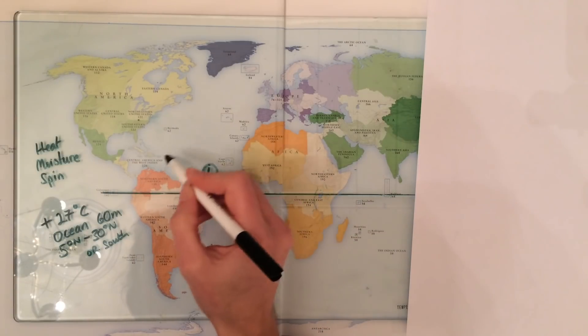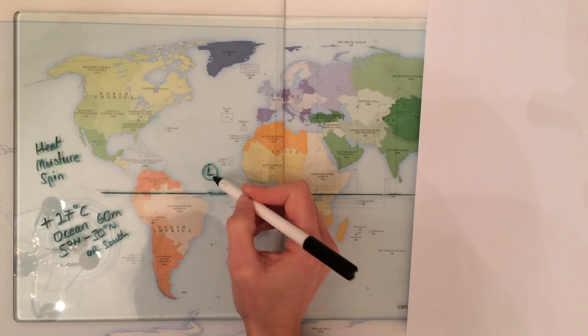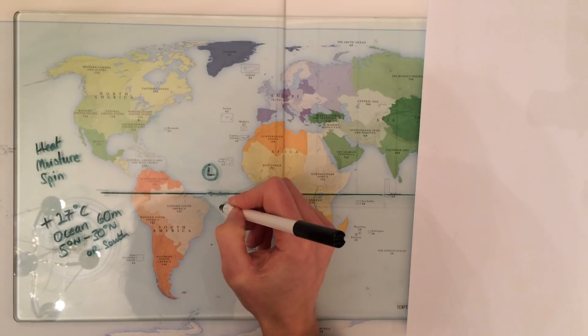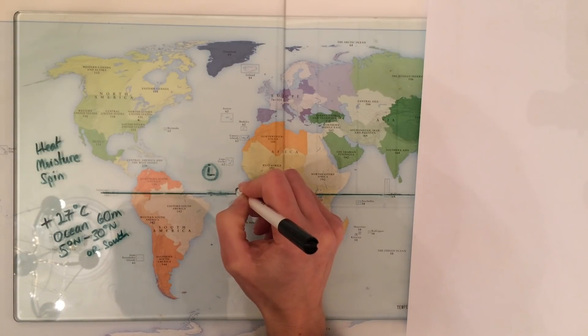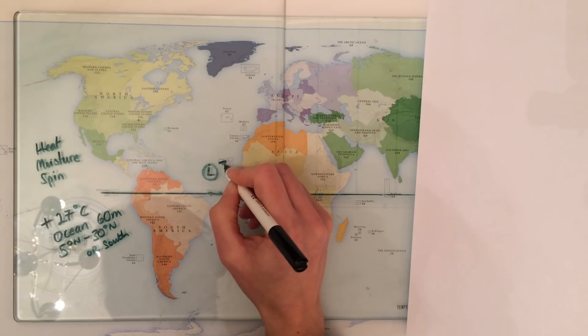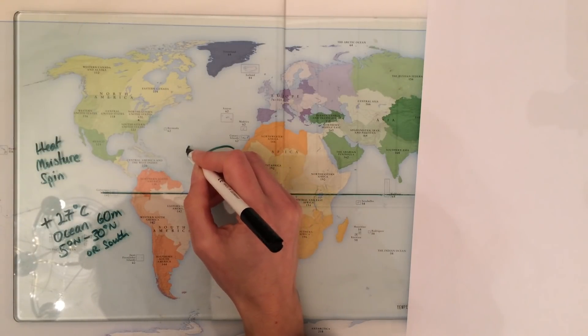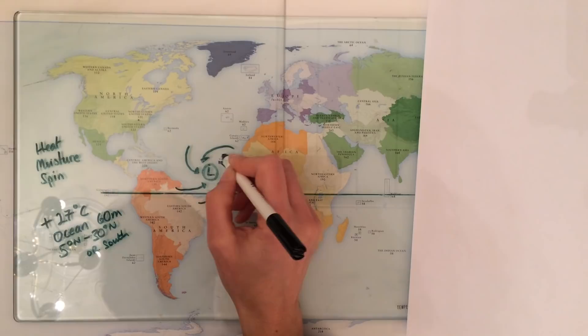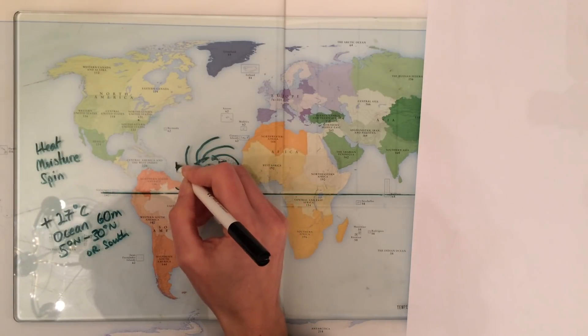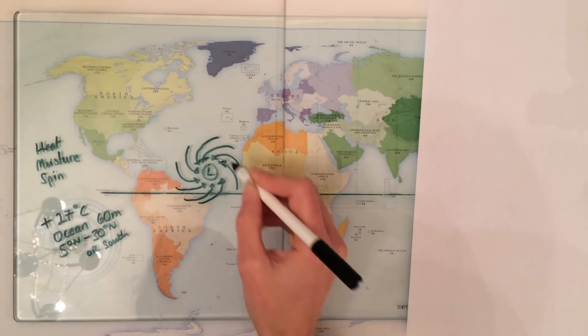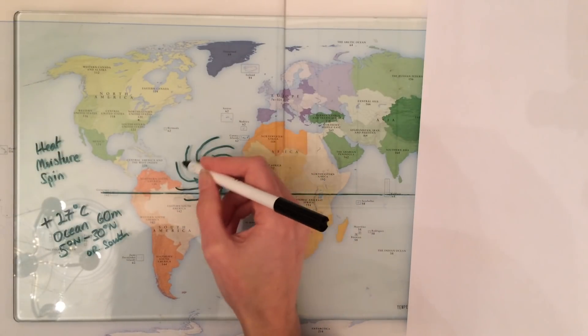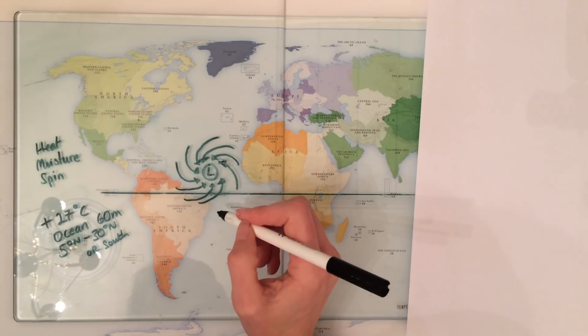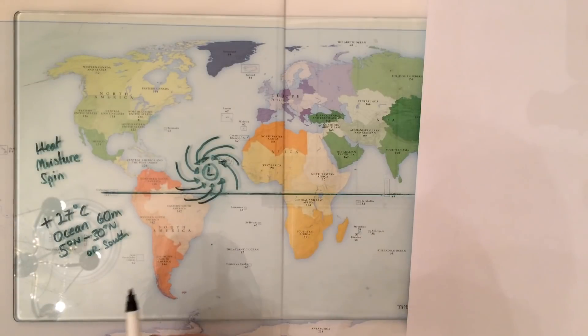Air will then rush in from the surroundings to replace the air that has just risen, but instead of rushing in straight lines, it twists and spins. The air actually comes in and is deflected to the right because of the Coriolis force. What we end up with is a spinning storm, as you can see there from the diagram. It's rotating in an anti-clockwise direction because air has been deflected to the right due to the Coriolis force, which is the earth's spin. That's a bird's eye view of the storm.